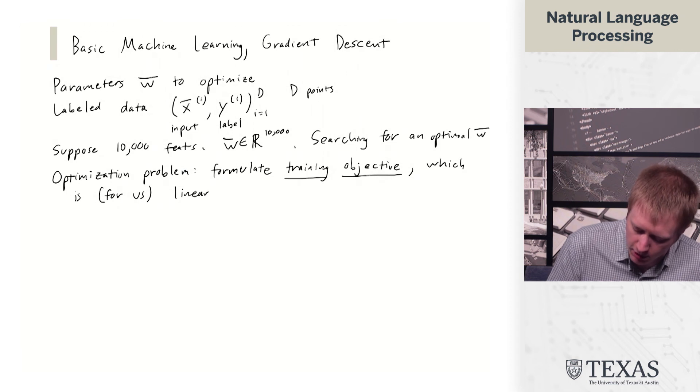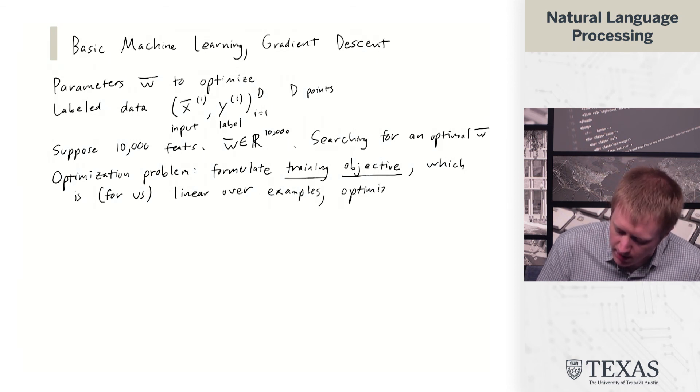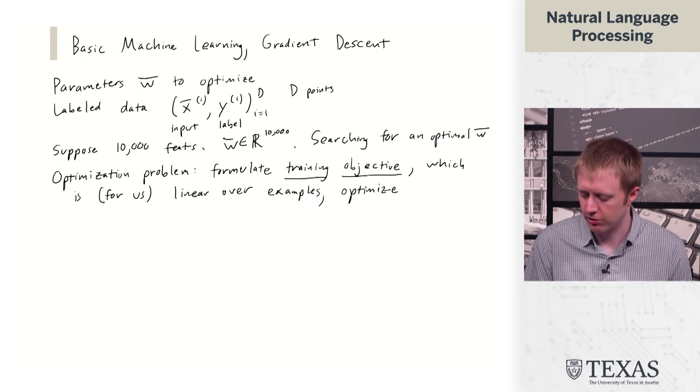And then we're going to have some sort of training which is going to be linear over examples, and then we are going to optimize it. And this linearity is going to be important for this idea of stochastic gradient descent.